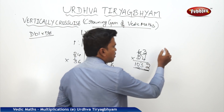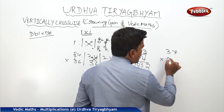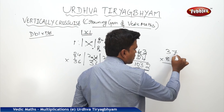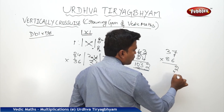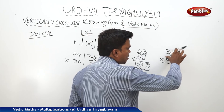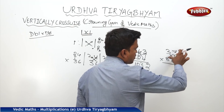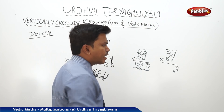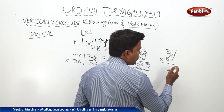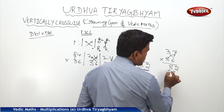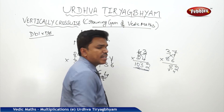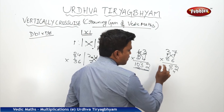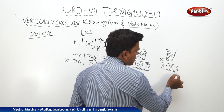One more example: 37 × 86. Step one: 7×6 = 42, drop 2 carry 4. Step two — cross multiply: 3×6 = 18, 7×8 = 56; 18 + 56 = 74, plus carry 4 = 78, drop 8 carry 7. Step three: 3×8 = 24, plus carry 7 = 31. Answer: 3182.